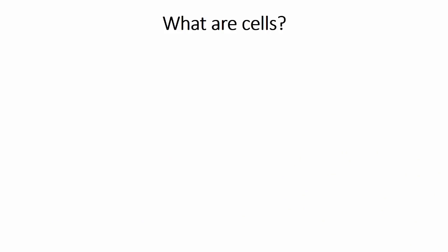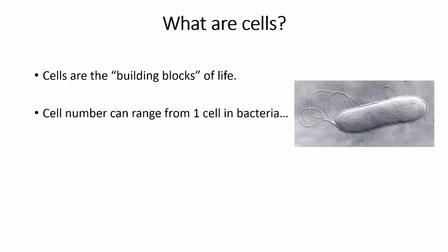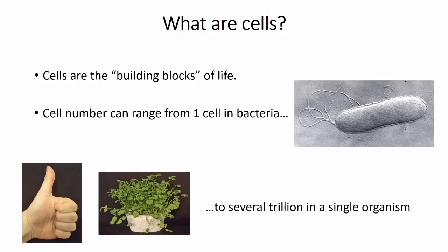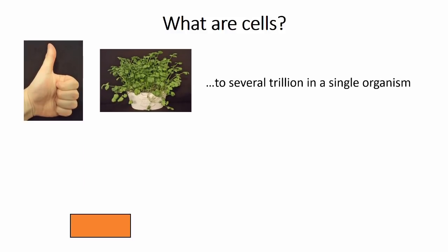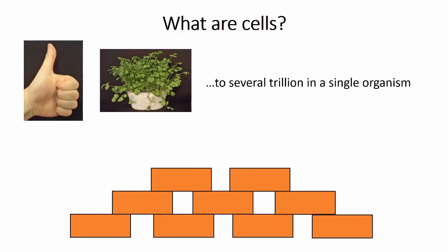So what are cells? Cells are regarded as the building blocks of life and are the smallest biological structure that have the capacity to survive and replicate by itself. The amount of cells that an organism can have varies from as low as a single cell in organisms such as bacteria, to several million, billion and even trillion in complex multicellular organisms such as plants and animals. In these organisms, cells act like bricks in a building and work together to form the complex structures that these organisms are.